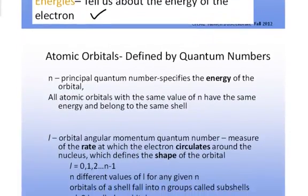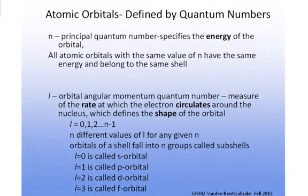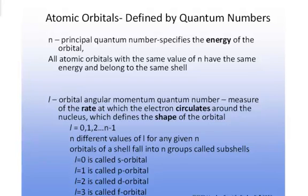These atomic orbitals are defined by quantum numbers. The quantum numbers label the different solutions for the wave function. N, the principal quantum number, specifies the energy of the orbital, hence the energy of the electron in the orbital. All atomic orbitals with the same value of N have the same energy and belong to the same shell.